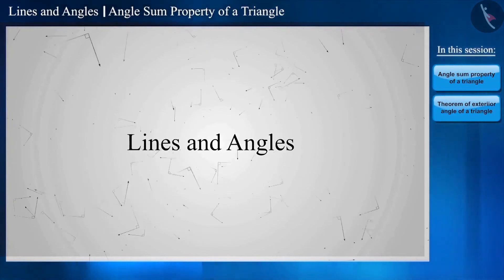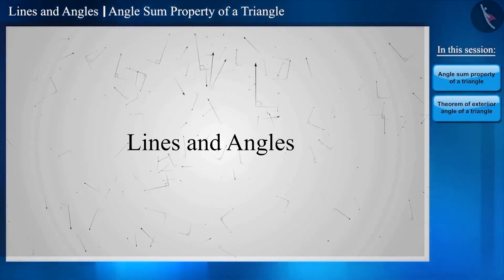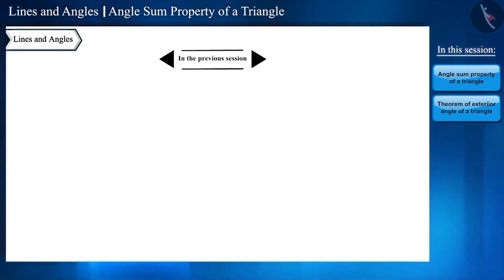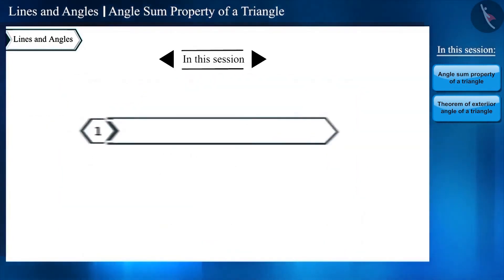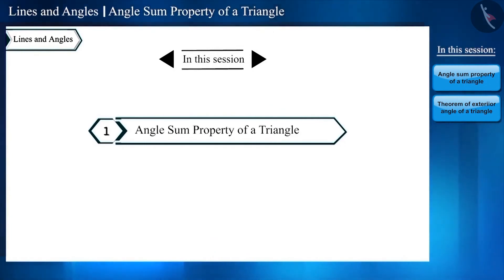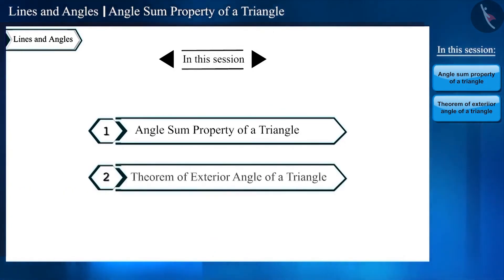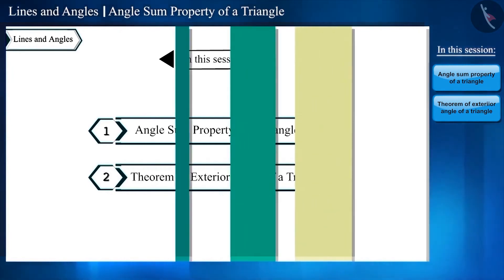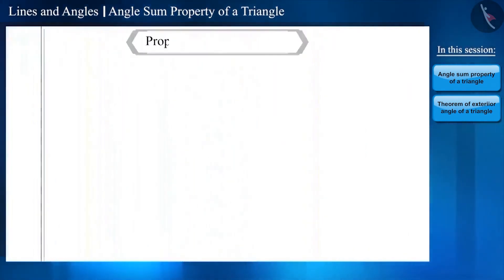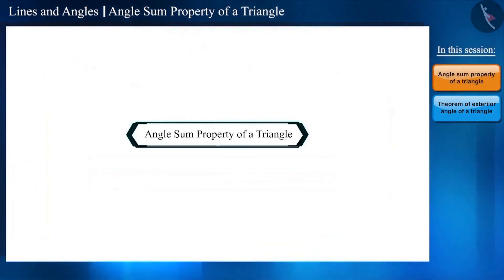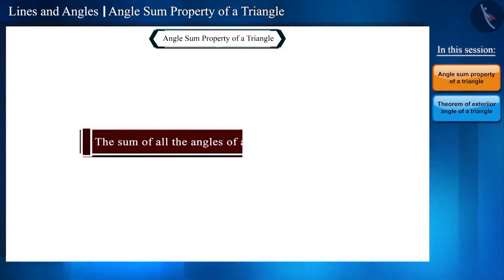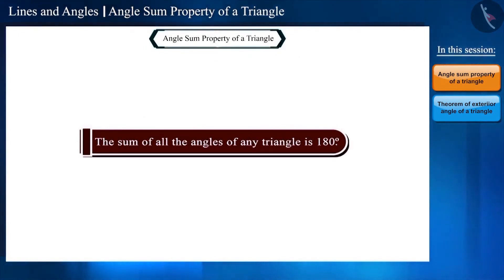Hello friends, welcome to this video on lines and angles. In the previous session we learned about lines parallel to the same line. Today we will discuss the angle sum property of a triangle and the theorem of the exterior angle of a triangle. We will prove two theorems using the properties of parallel lines. First theorem: the sum of all the angles of any triangle is 180 degrees.